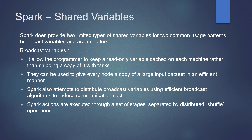Broadcast variables allow the programmer to keep a read-only variable cached on each machine rather than shipping a copy of it with each task. They can be used to give every node a copy of a large input dataset in an efficient manner. Spark attempts to distribute broadcast variables using an efficient broadcasting algorithm to reduce communication cost.